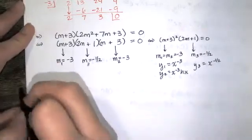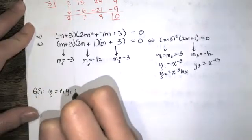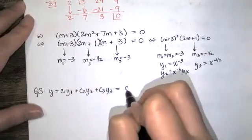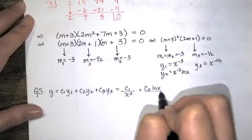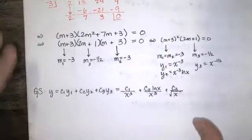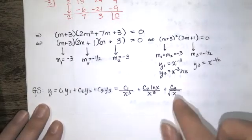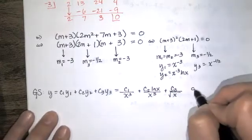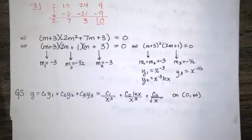So those are our solutions, and the general solution is c1*y1 plus c2*y2 plus c3*y3, which is c1 over x cubed plus c2 times ln(x) over x cubed plus c3 over the square root of x. This works for all x not equal to 0, and since we have a square root, x must also be positive — so the maximal interval of existence is (0, infinity).